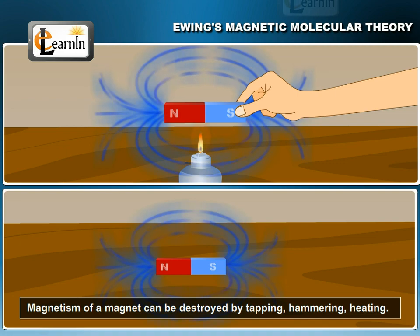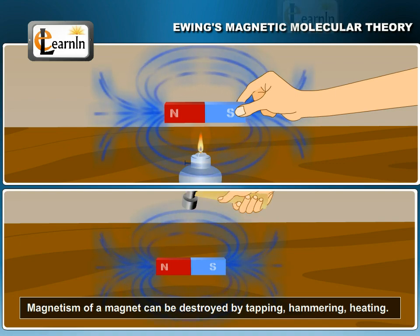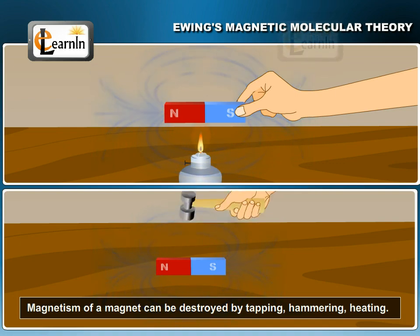Magnetism of a magnet can be destroyed by tapping, hammering, heating, etc.